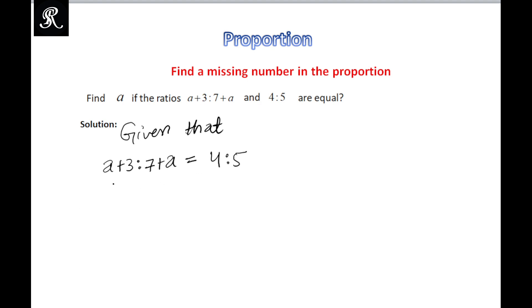Now in order to solve this problem and find the missing number, we will convert it into the fraction form. (a+3)/(7+a) is equal to 4/5. This is the fraction form of the above proportional problem.